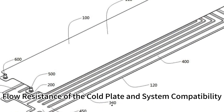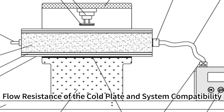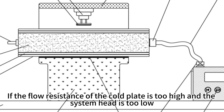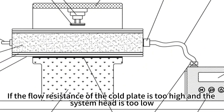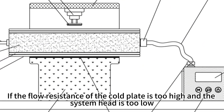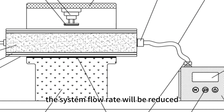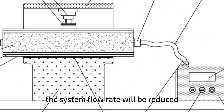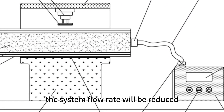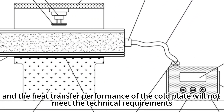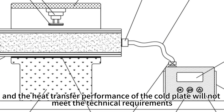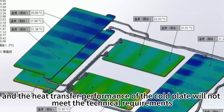Flow resistance of the cold plate and system compatibility. If the flow resistance of the cold plate is too high and the system head is too low, the system flow rate will be reduced, and the heat transfer performance of the cold plate will not meet the technical requirements.